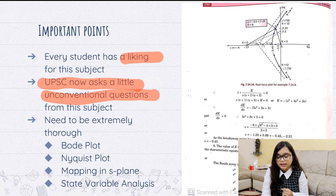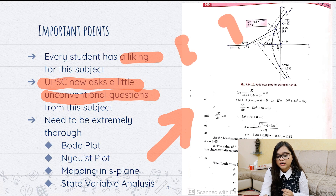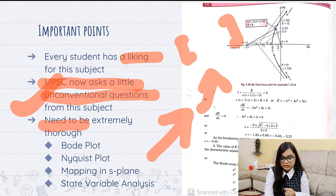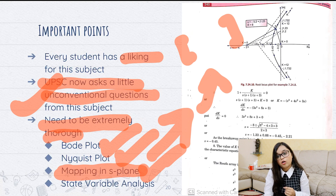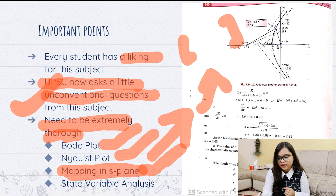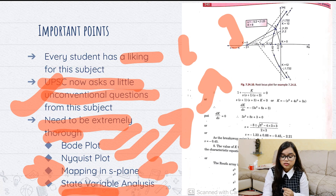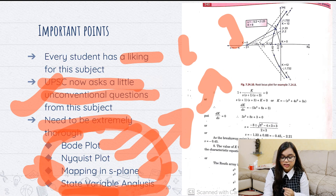For example, in 2019 there was a question on controllability and observability where just making the matrices wasn't enough — you needed proper in-depth understanding to solve it. If you have to study Control Systems, you have to study one level up because UPSC doesn't ask conventional and easy questions from this subject anymore. The topics you need to be extremely thorough about are Bode plot, Nyquist plot, mapping in the S-plane — which is the most important according to me and still very uncharted territory — and state variable analysis.